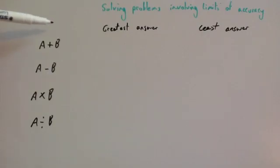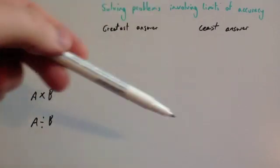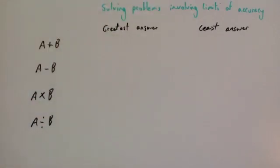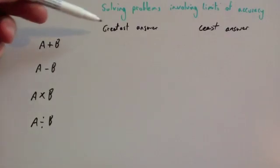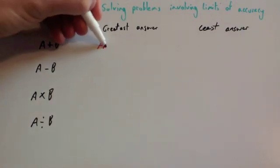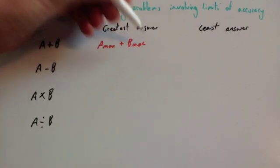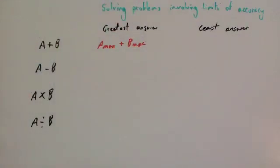We're going to look at different scenarios. If we're adding a and b, subtracting b from a, multiplying a and b, and dividing a by b — how do you get the greatest possible answer and the least possible answer by using the upper and lower bounds? If you were going to add two numbers together and want the biggest possible answer, you'd add the two upper bounds: a max plus b max. That would give you the highest possible answer for a plus b.